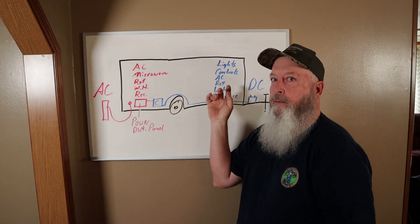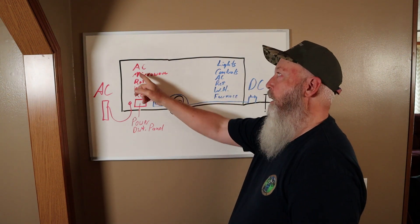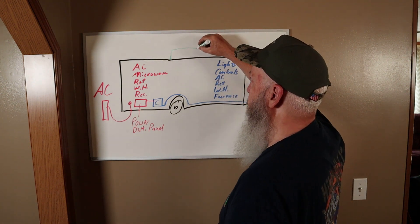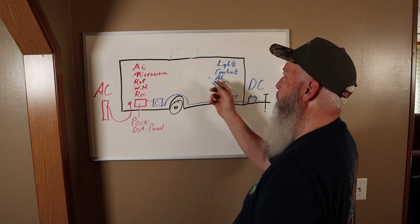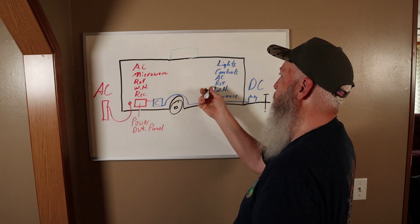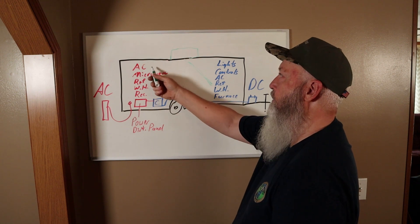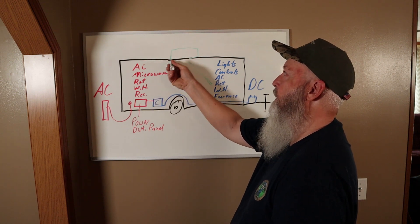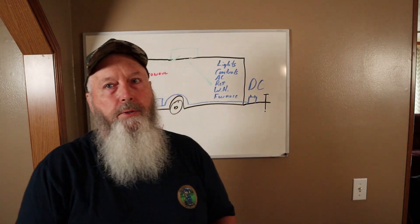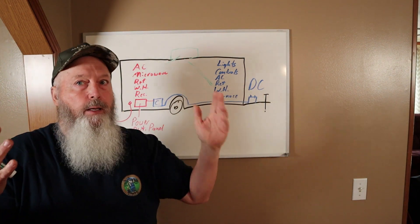That's why we have a converter. When your shore cord is plugged into an AC source, it's charging that battery and then these DC appliances that need DC for controls - let's just take the air conditioner for instance - the controls need DC power, but you also have to have AC power to run the compressor and the fan.